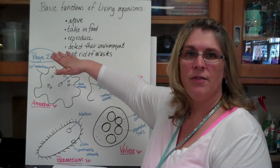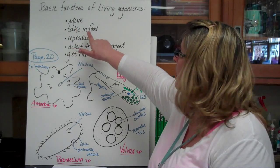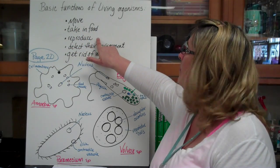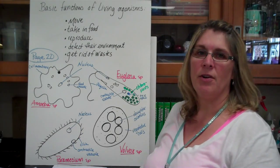Now there are five basic functions of all living organisms. They all have to move at some point in their life. They all have to take in food. They all have to reproduce. They have to be able to detect their environment and they have to be able to get rid of waste.